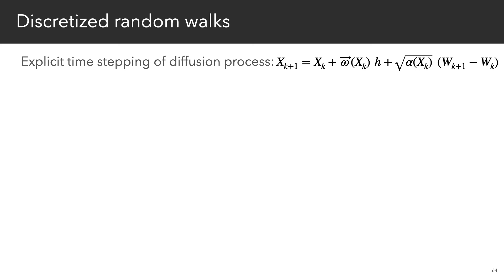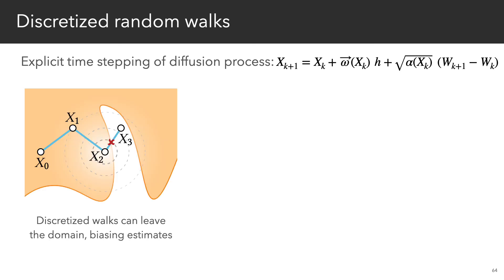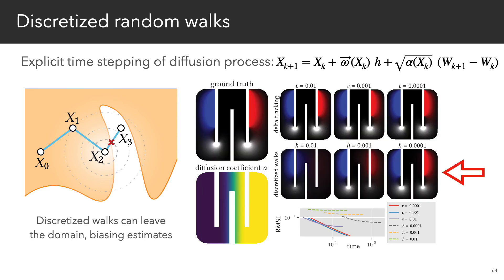Like ray-marching, Feynman-Katz can be directly approximated by simulating a diffusion process using explicit time-stepping. Unlike walk-on spheres, however, discretized random walks can leave the domain, which biases the solution estimates.